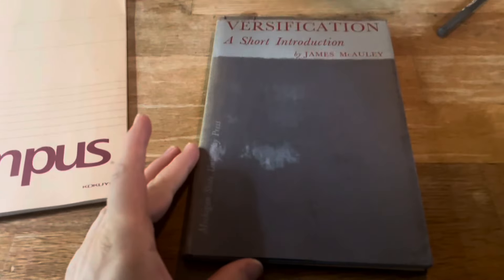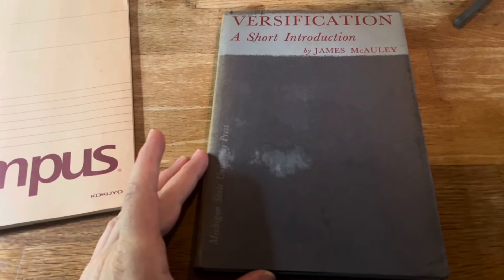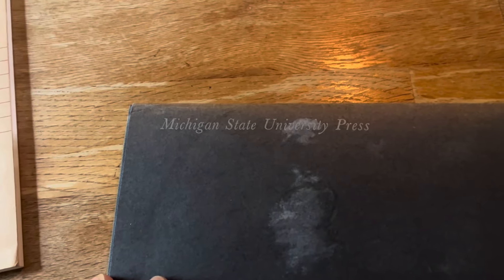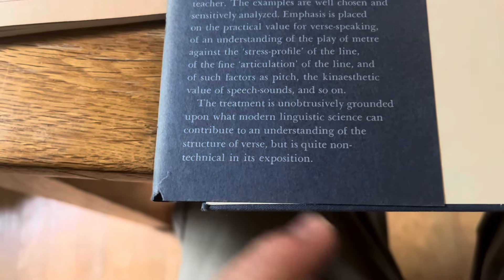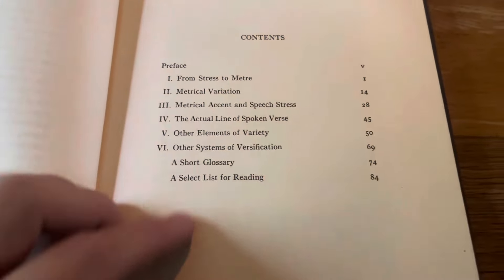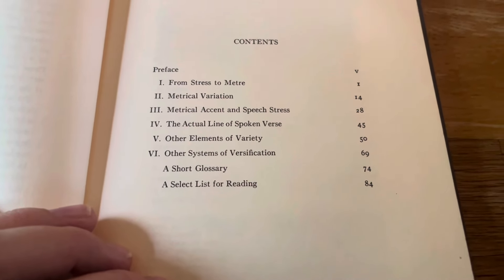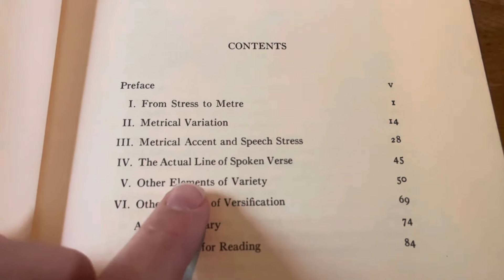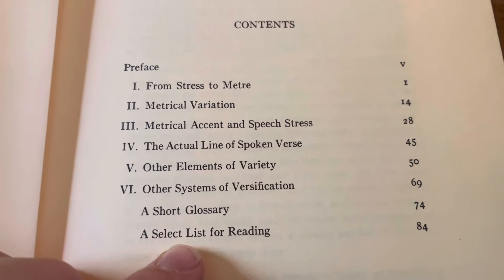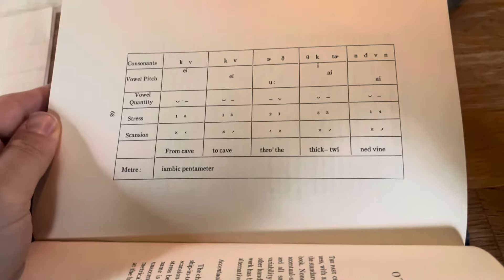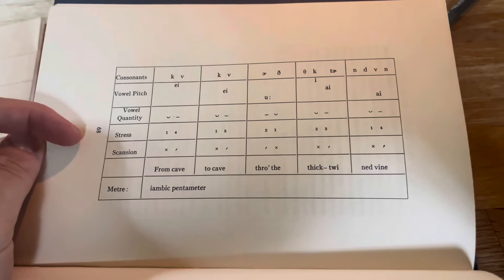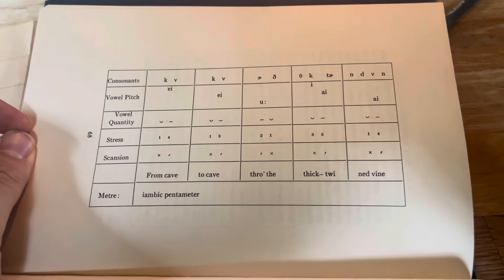Here we have a book that was given to me as a gift — Versification: A Short Introduction by James McCauley, a product of Michigan State University Press. Nothing on the spine, which I think is cool. On the back you see James McCauley, an expert in versification. Encouragingly, the book is quite non-technical in its exposition. It has an attractive little table of contents, but I haven't read this book yet. I've dipped into it from time to time for collage material. The chapter that most intrigues me is maybe 'Other Elements of Variety' — like, what kind of sprung rhythms could we be talking about here? Did you ever know that you can turn a line of verse into a beautiful chart?